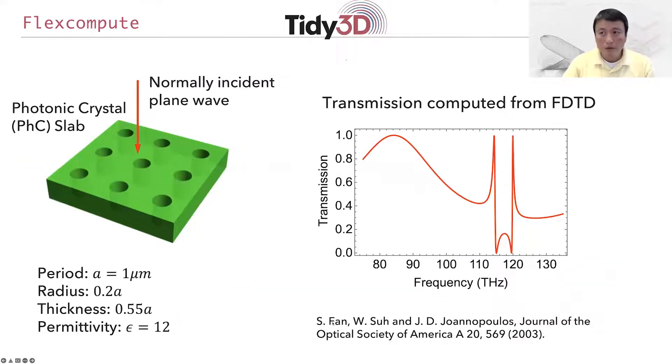In our previous video, we looked at using FDTD method to compute the transmission through a uniform dielectric slab. In this video, we are going to do a more complex structure of a transmission through a photonic crystal slab.